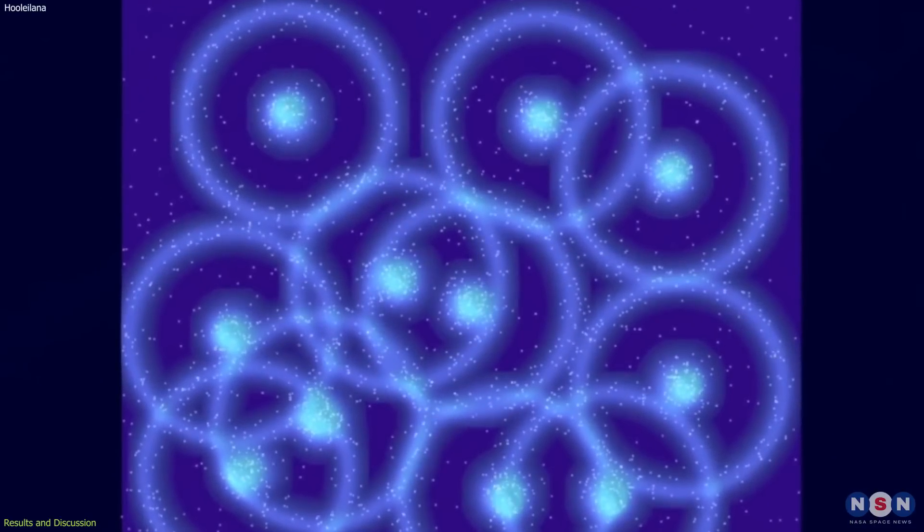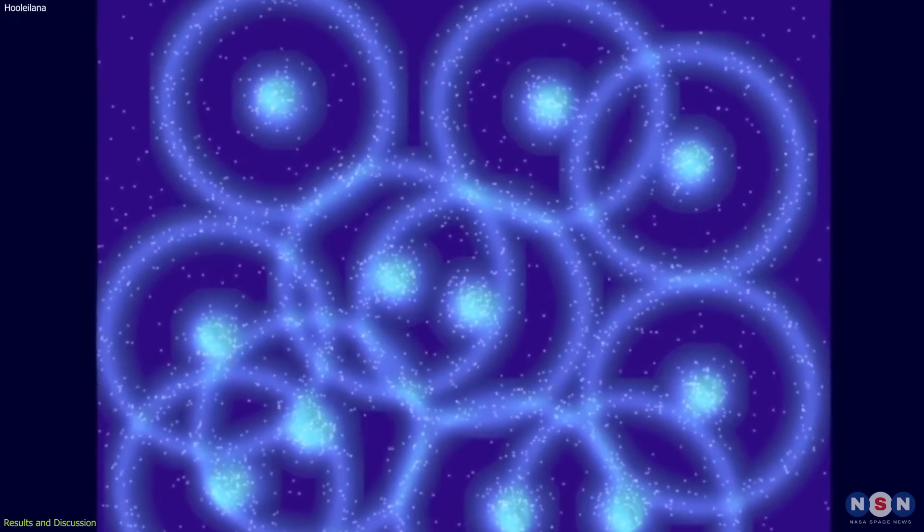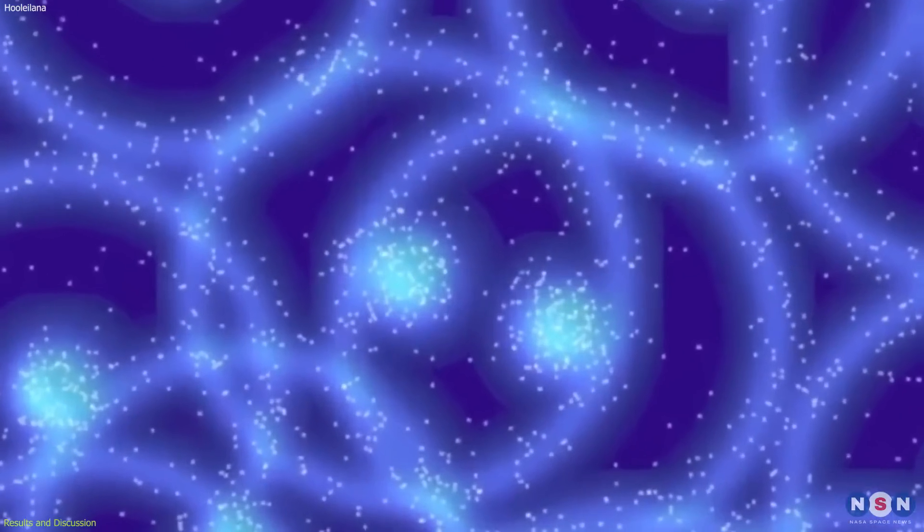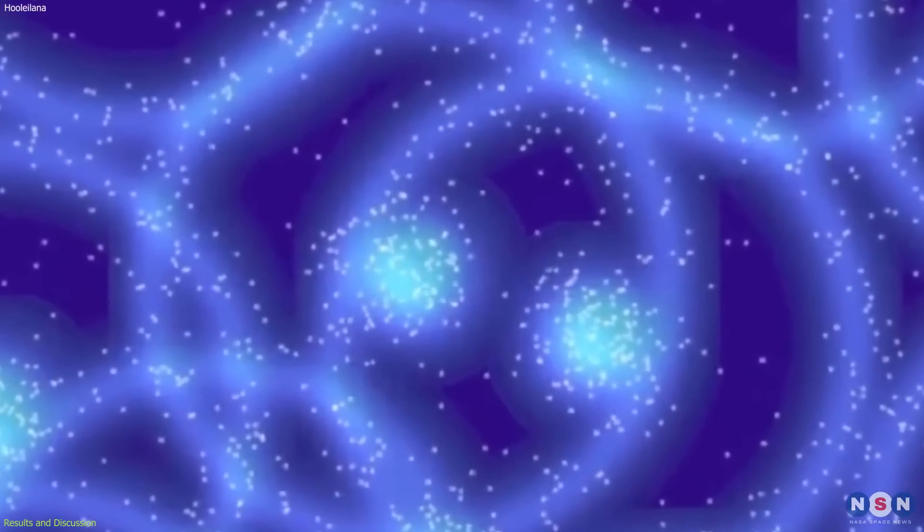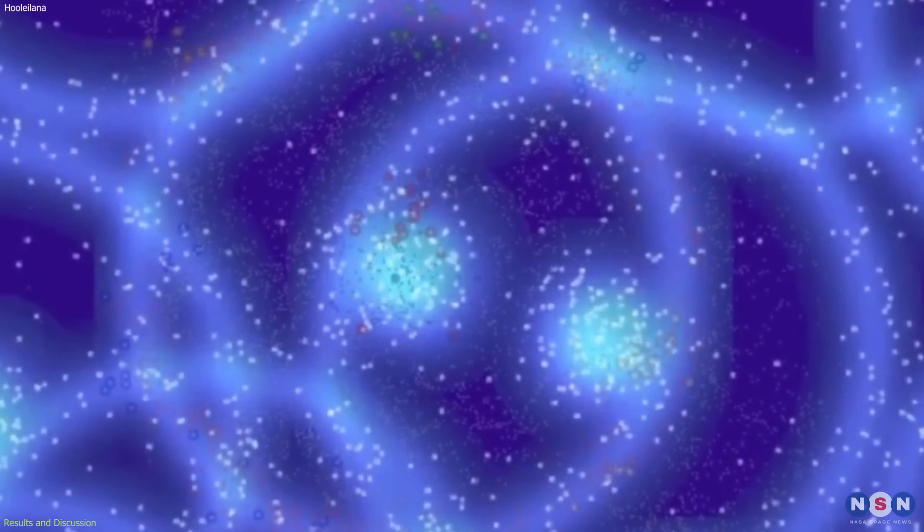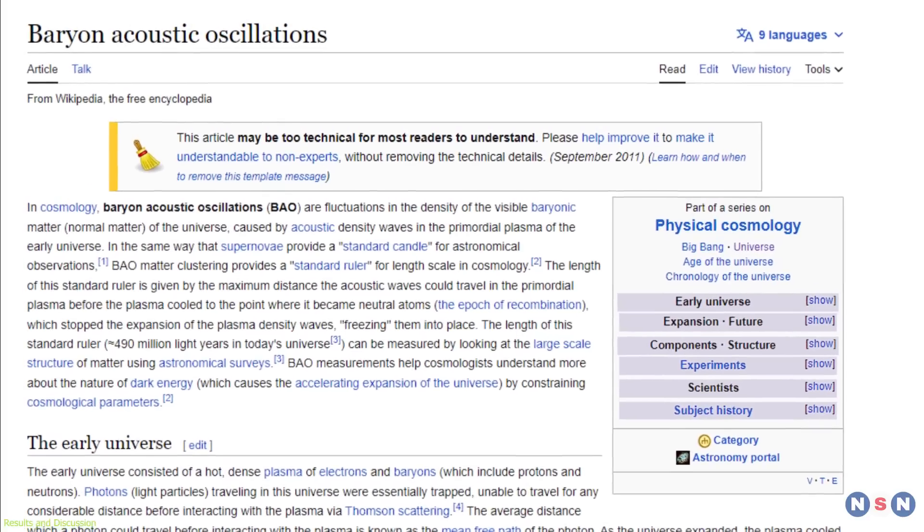When the universe cooled down enough, the baryons and photons decoupled and stopped interacting. This froze the sound waves in place and left behind a characteristic imprint on the distribution of matter in the universe. This imprint is what we call BAOs.